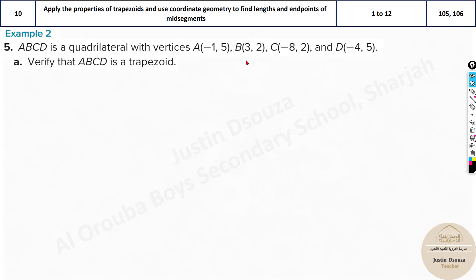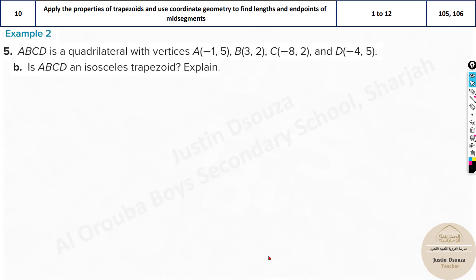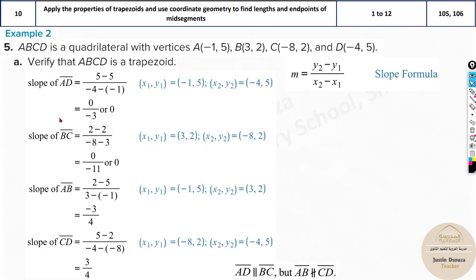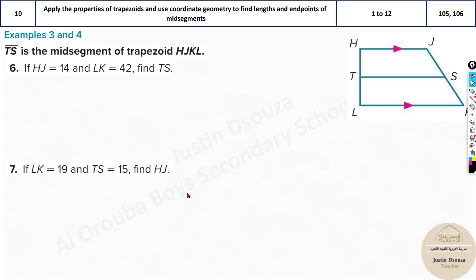We have one more problem using the same method. Find the slope for all four sides. The slopes found were 0 and 0 for one pair, and negative 3/4 and positive 3/4 for the other — meaning one set of lines is parallel but the others are not, so it is a trapezoid. For isosceles, find the distance of the non-parallel legs. Remember: don't find the distance of the parallel sides — find AB and CD which are non-parallel. They are equal in this case, so it is an isosceles trapezoid.